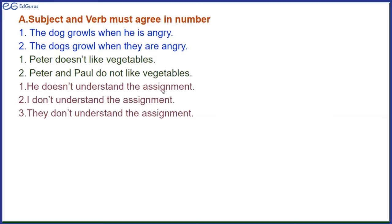He doesn't understand the assignment — 'doesn't' because 'he' is singular. I don't understand the assignment, and they don't understand the assignment — with 'they' it is 'don't,' a plural verb. With 'I' also a plural verb, because 'I' and 'you' — though 'I' is singular and 'you' can be singular or plural — with these two pronouns we always use a plural verb. I play, I eat, I walk. You try, you run, you dance, you sing.